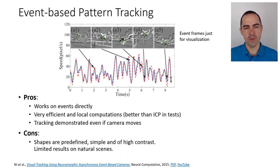What are the advantages and disadvantages? Advantages: it works on events directly, which fits with this paradigm of event-based processing, and it's doing it one by one, so like the blob tracker, it's very efficient with local computations. It's better than ICP—iterative closest point—in some tests. This is a related paper by the same author.